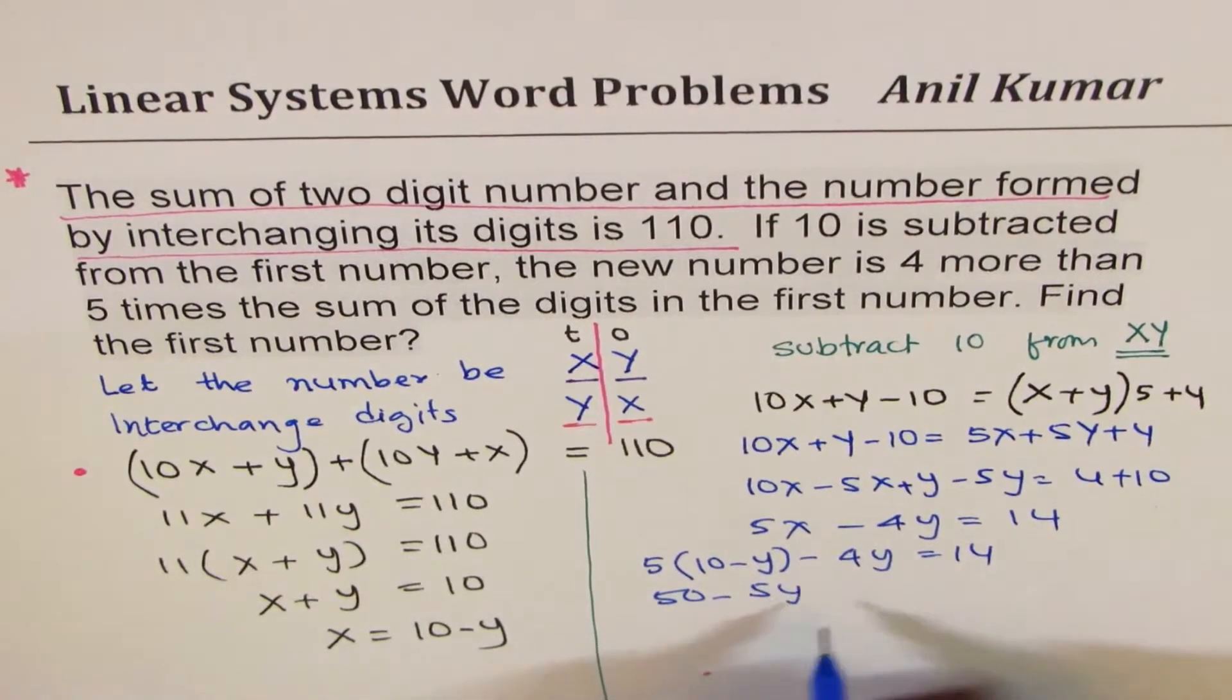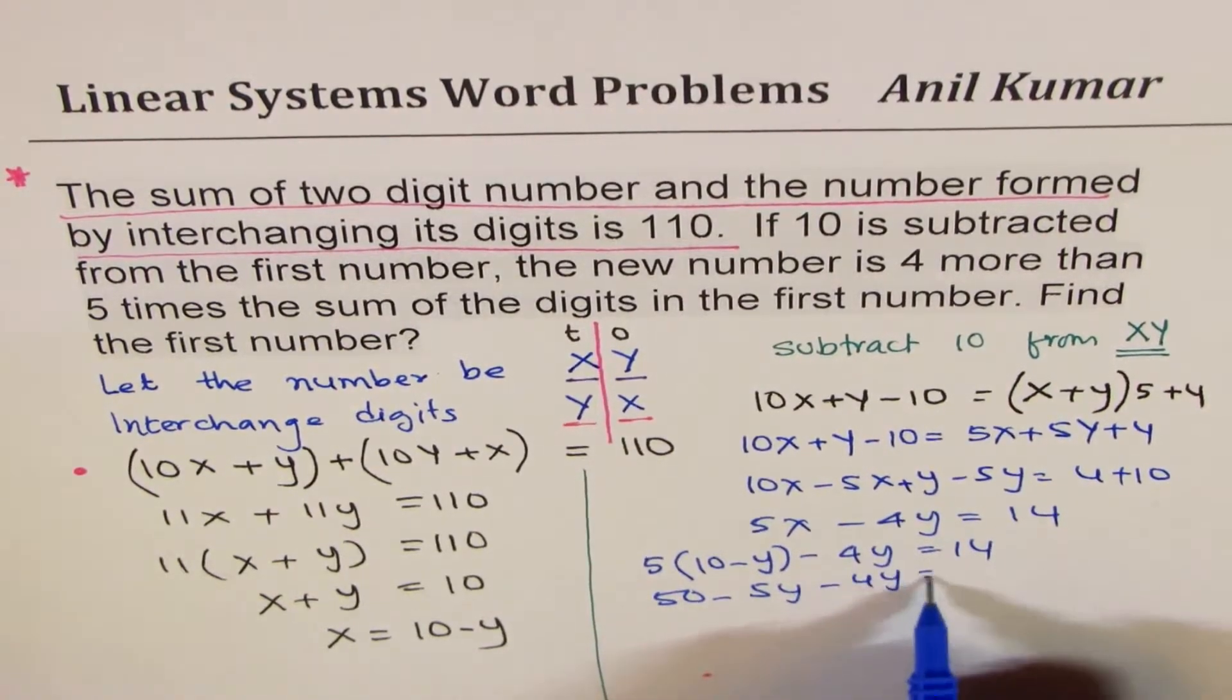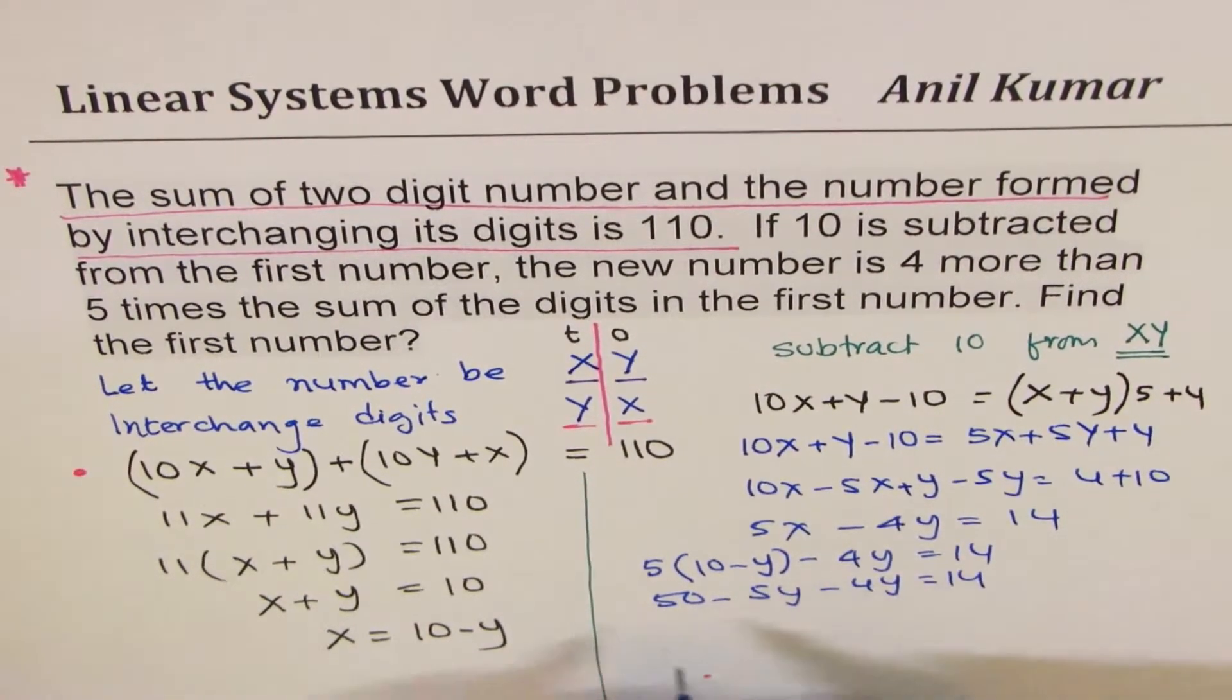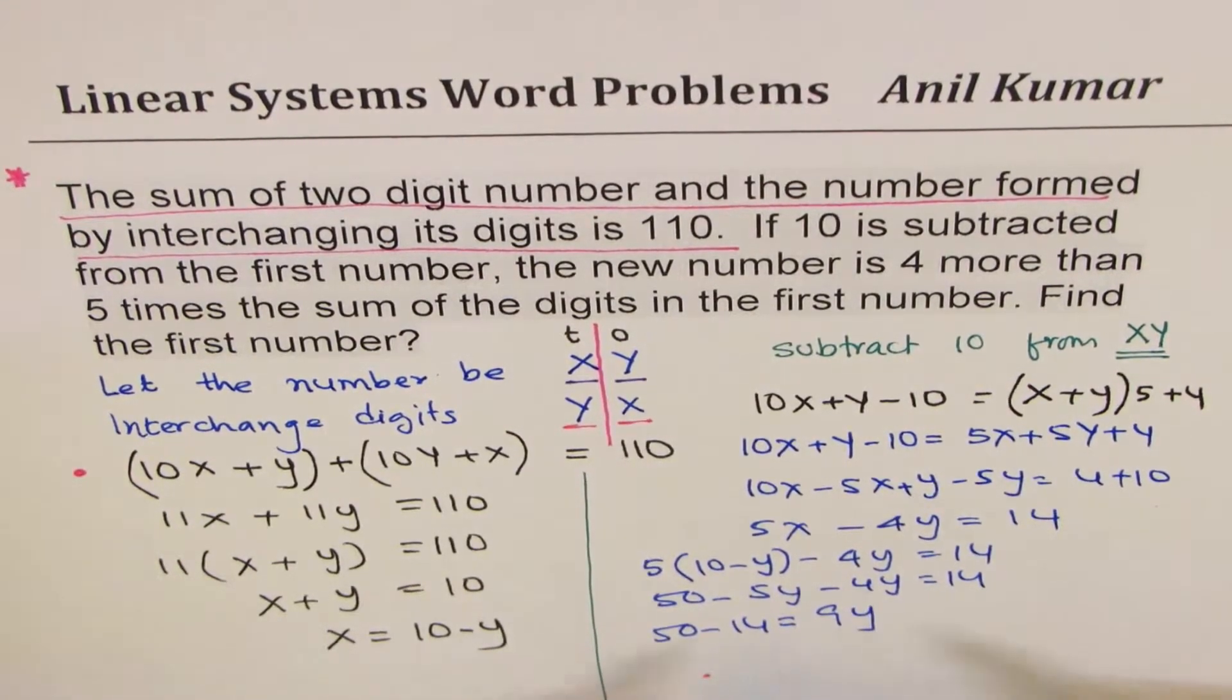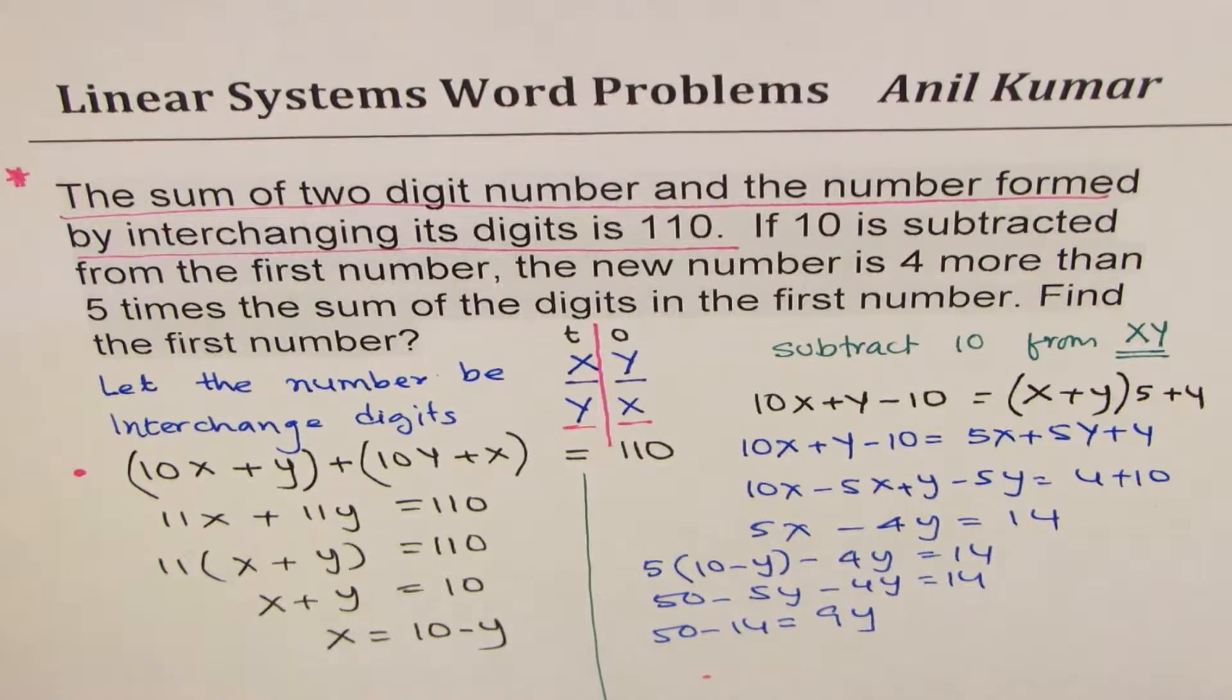So we'll write 5 times 10 minus y minus 4y equals to 14. 50 minus 5y minus 4y equals to 14. So that gives you 15 minus 14 equals to, bringing it to the right side, 9y.